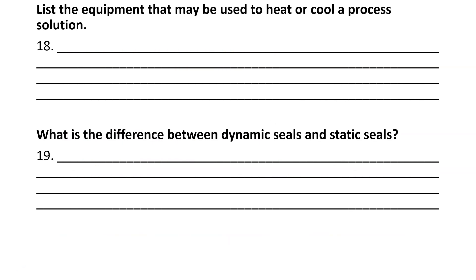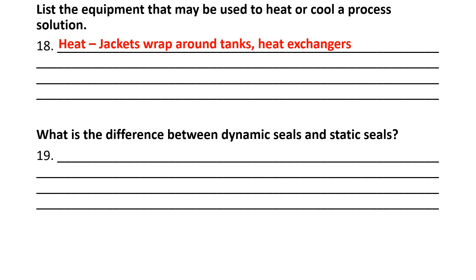Number 18: list the equipment that may be used to heat or cool a process solution. To heat things, you can use jackets that wrap around tanks, heat exchangers, and also heating coils — which I left off but would be another one. For cooling, we could use chillers — this is like the AC in your vehicle — and cooling towers as well.